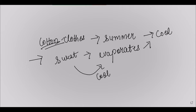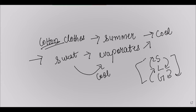Let's quickly revise everything: we discussed the effect of temperature and pressure on states of matter — converting solid to liquid, liquid to gas, and vice versa. We also discussed direct conversions: solid to gas (sublimation) and gas to solid (deposition). We then understood latent heat — the hidden heat required to convert from one state to another. Finally, we discussed the factors affecting rate of evaporation: surface area, temperature, humidity, and wind speed.